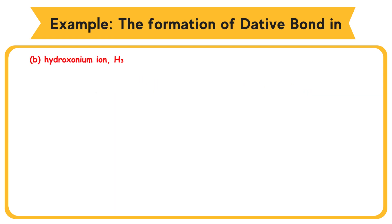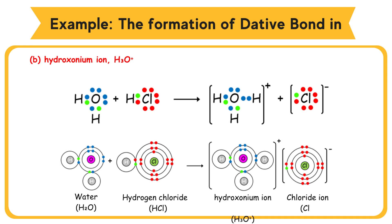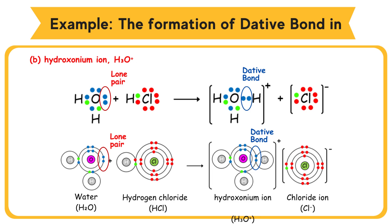B: Hydroxonium Ion. Formation of Dative Bond in Hydroxonium Ion. Hydrogen chloride gas dissolves and ionizes in water to produce Hydroxonium Ion (H3O+) and Chloride ion (Cl-). Oxygen atom in water molecule has two lone pairs of electrons. A dative bond is formed when the oxygen atom in the water molecule contributes a lone pair of electrons for sharing with a hydrogen nucleus from the hydrogen chloride molecule, which is transferred to the water molecule.